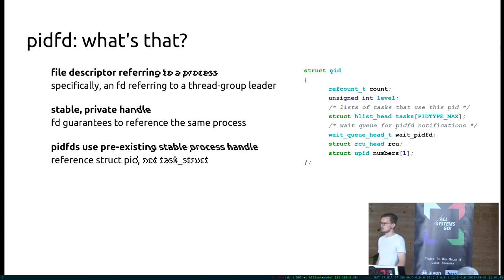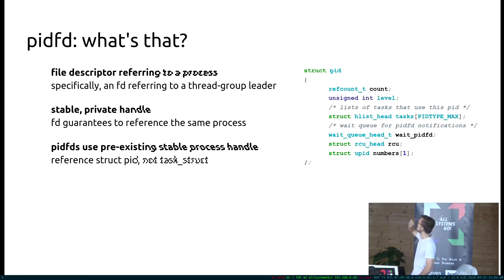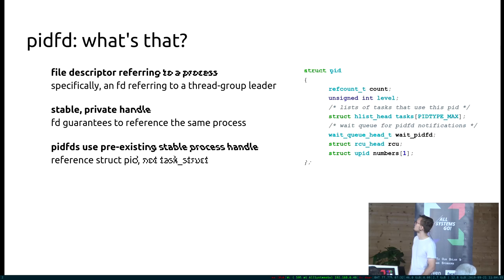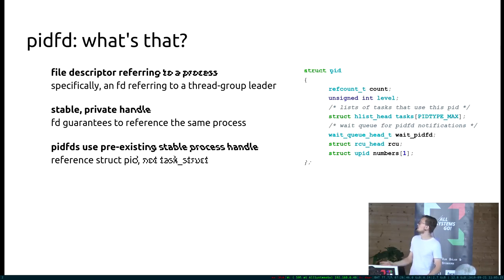The idea is from a struct pid you can get to all of the interesting task structs which reference a type of pid you're interested in. The kernel makes a difference between a thread group leader, a process group leader, and a session ID leader. You can get from a struct pid, via hlist_head tasks and pid_type_max, to all the task structs used by this struct pid for a specific process type. So that's a PIDFD — it stashes a reference to struct pid and doesn't go away.